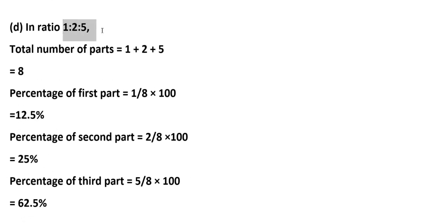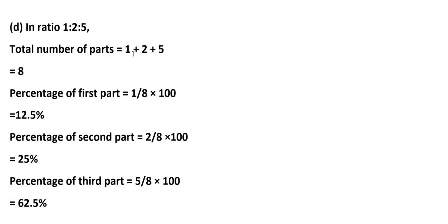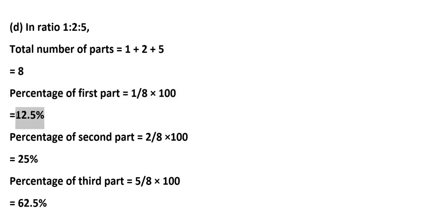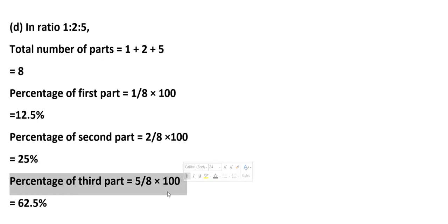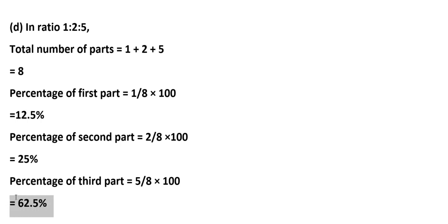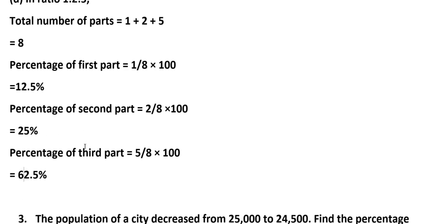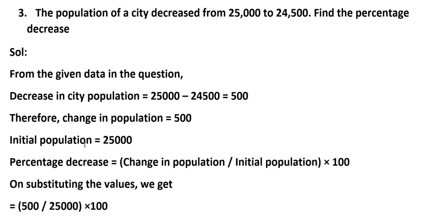D: in ratio 1:2:5, total number of parts = 1+2+5 = 8. Percentage of first part = (1÷8)×100 = 12.5%. Percentage of second part = (2÷8)×100 = 25%. Percentage of third part = (5÷8)×100 = 62.5%. When you add these percentages — 12.5% + 25% + 62.5% — you get 100%.